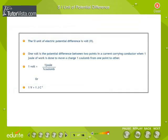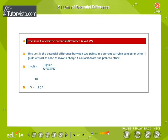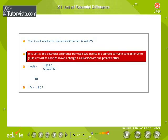SI unit of potential difference: The SI unit of electric potential difference is volt (V). One volt is the potential difference between two points in a current carrying conductor when one joule of work is done to move a charge one coulomb from one point to the other.